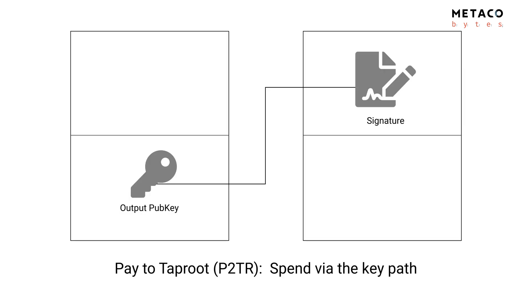Now let's talk about Pay-to-Taproot. I explained those past ways of spending outputs because both the hash of the public key and the hash of the script are commitments to some way of spending. The commitment in Taproot is actually not a hash — it's a public key, called the output public key.